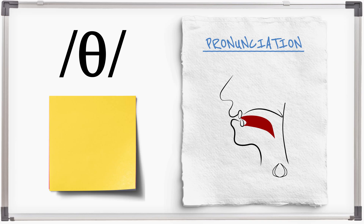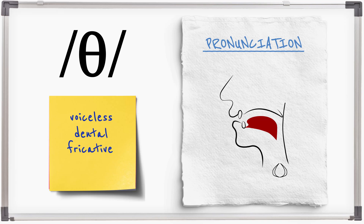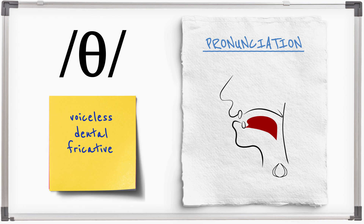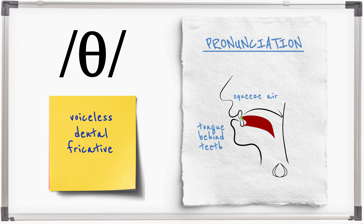TH is a voiceless, dental, fricative. TH is made by positioning the tongue just behind the teeth and squeezing air past the closure. TH — the vocal cords do not vibrate.